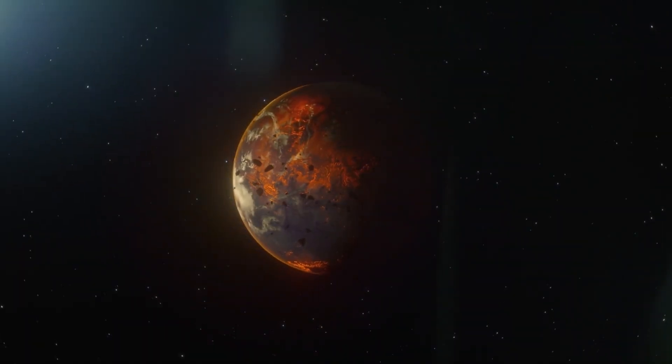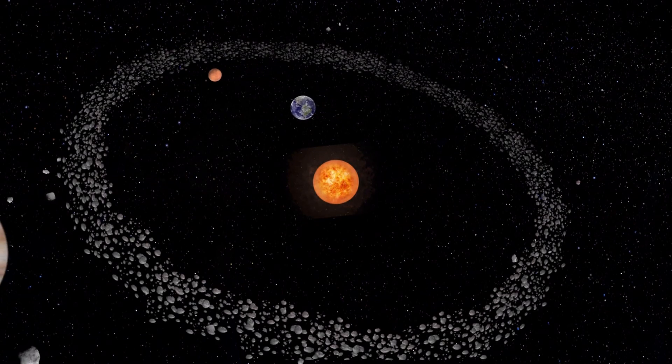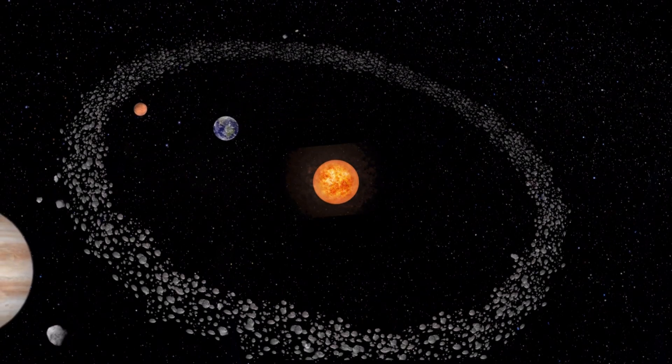Asteroids are rocky remnants from the early solar system. Most reside in the asteroid belt between Mars and Jupiter. However, some stray close to Earth, posing a potential threat.